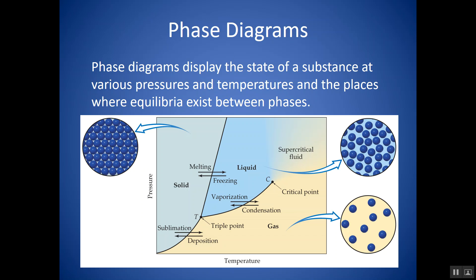So if the phases were never labeled, you'd go to a point where all three are present. That makes sense: at the same pressure, as you increase the temperature, it should go from solid to liquid to gas. Notice as you cross these lines you're doing different phase changes. Going from solid directly into gas is sublimation; going from gas directly into solid is deposition.